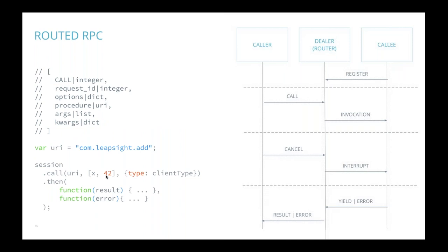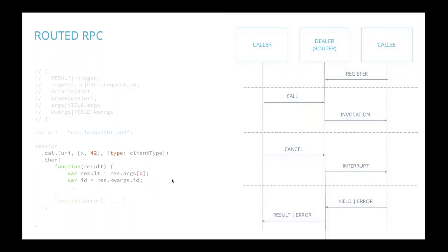For a call, it's very simple: I grab the session, do a call using the same URI, and pass the arguments. The interesting thing about WAMP arguments is that you have two types: ordered arguments called the 'args list', and a map called keyword arguments. Every procedure can receive a number of positional arguments, a map of key-value pairs, or a combination. In this example we're calling and passing x with the value 42, plus an object saying the client type — we use that to identify who is calling. Then you get the result by implementing a callback function.